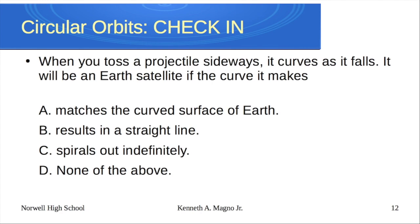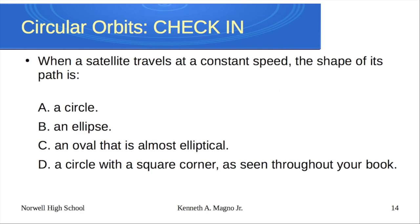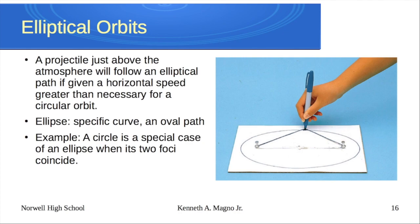When you toss a projectile sideways, it curves as it falls. It will be an Earth satellite if the curve it makes matches the curve of the surface of Earth. When a satellite travels at constant speed, the shape of its path will be a circle. If we get perfectly constant speed, we get perfectly uniform circular motion. However, in the real world, we get elliptical orbits because we can't achieve that perfect speed. An ellipse has one focus where the satellite appears to orbit and another focus.